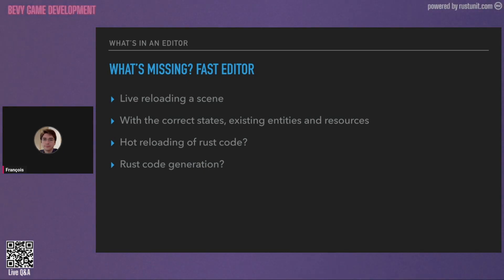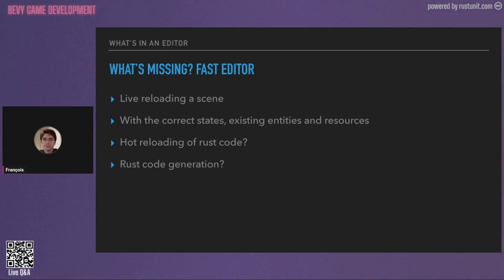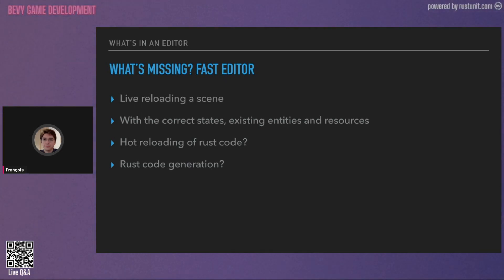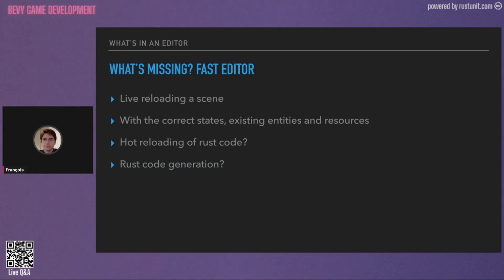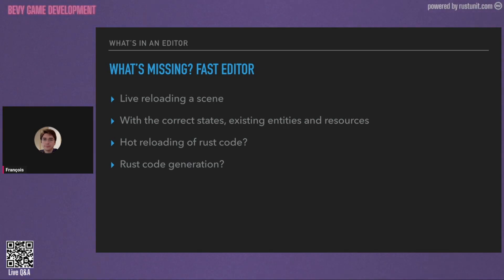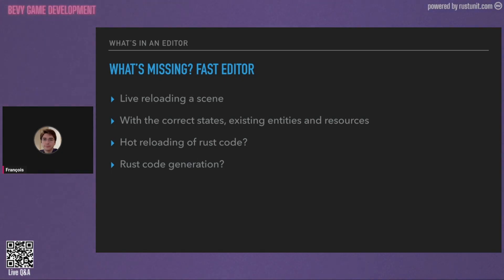What would be needed to have a fast editor? We would need to be able to live reload a scene — and live reloading a scene is not just reloading the current scene, we also need the current state, the existing entities that are not part of the scene but we still want, and the resources to track the global state. Do we want to hot reload Rust code? And even more, do we want Rust code generation? For example, if I want to change the shader file for a material, it's currently implemented with a trait, so changing that through an editor would require moving it to a scene file or material file instead of Rust code.